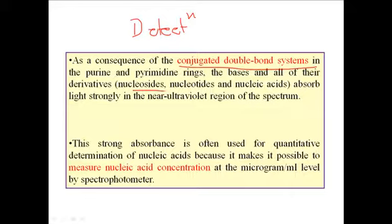The derivatives of bases, meaning the nucleosides, nucleotides, and nucleic acids, all these things can absorb highly strong light in the near ultraviolet region of the light. The absorption can be measured at 260 nanometers.